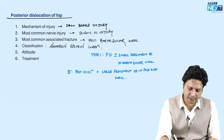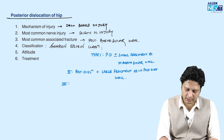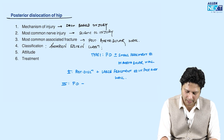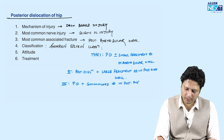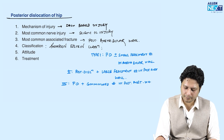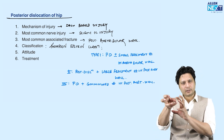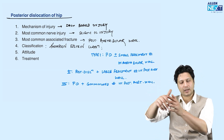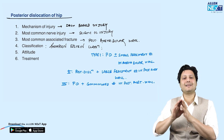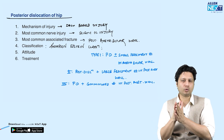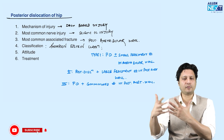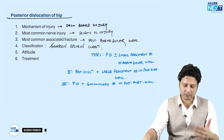Type 3 is posterior dislocation associated with a comminuted fracture in the posterior acetabular wall. A comminuted fracture means it is broken into multiple pieces — it is not a single fragment to be fixed, but multiple fragments. That is type 3.